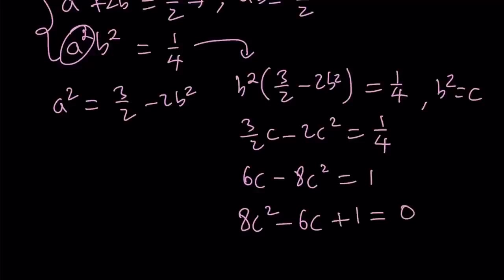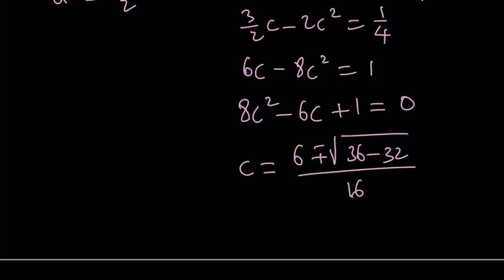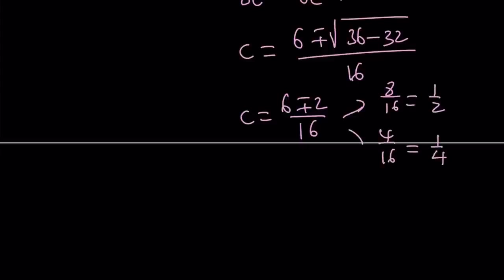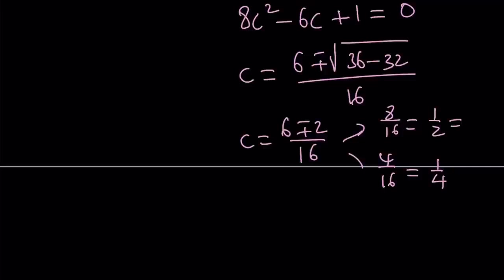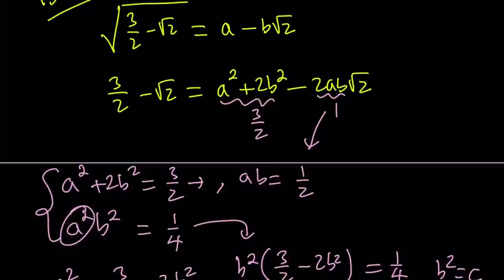From here, we can find the c values, set them equal to b², find the b values, and then the a values. Applying the quadratic formula, c equals (6 ± √(36 minus 32)) divided by 16. Since 36 minus 32 is 4, and √4 is 2, this becomes c equals (6 ± 2) divided by 16. That gives 8/16 or 4/16, so c is either 1/2 or 1/4. We're looking for rational numbers where b² = c. Since we want a and b to both be positive, we go with b² equals 1/4.